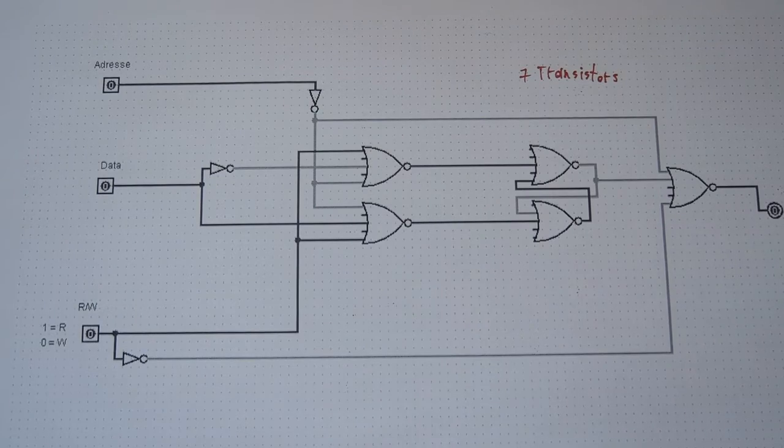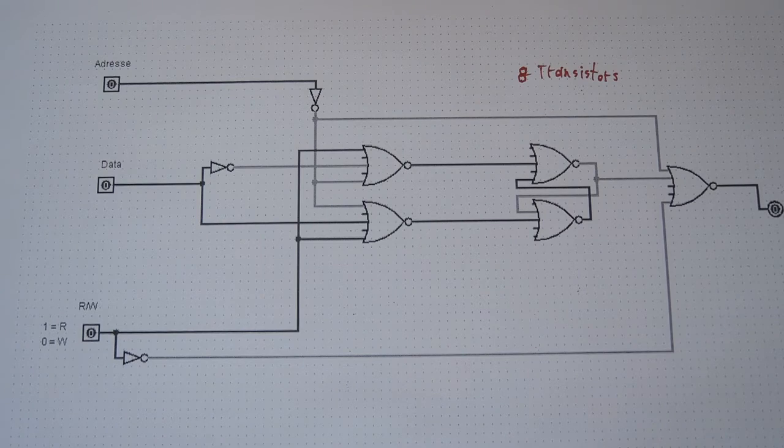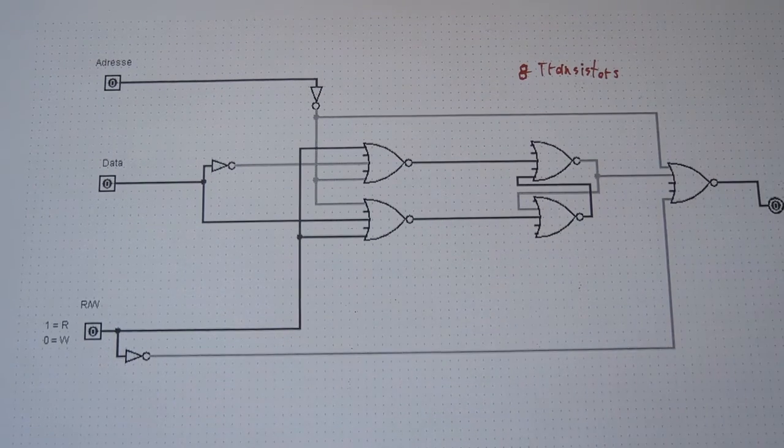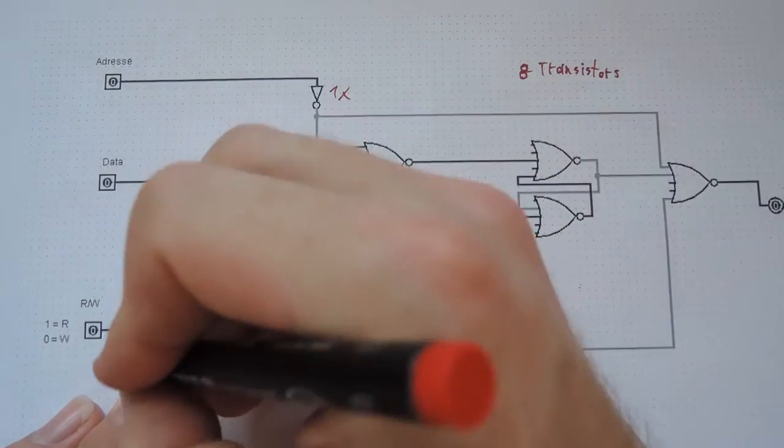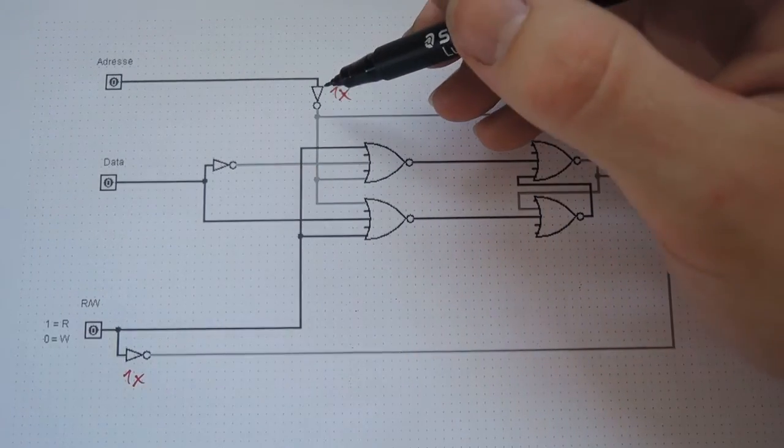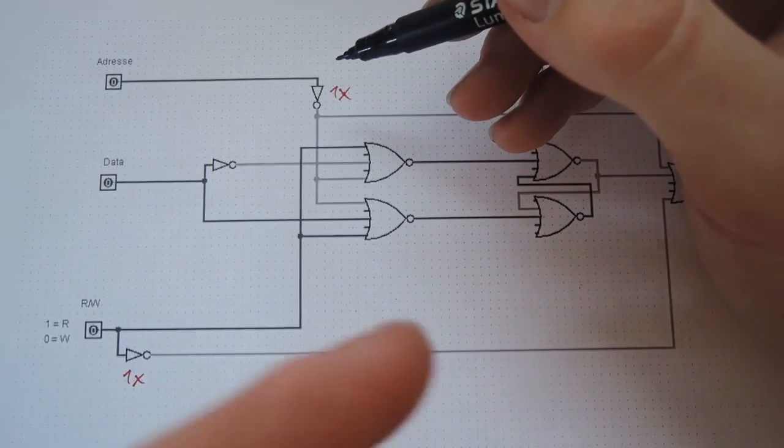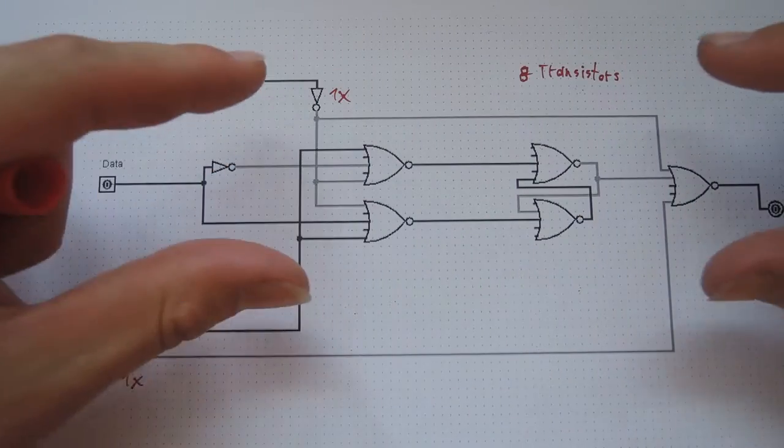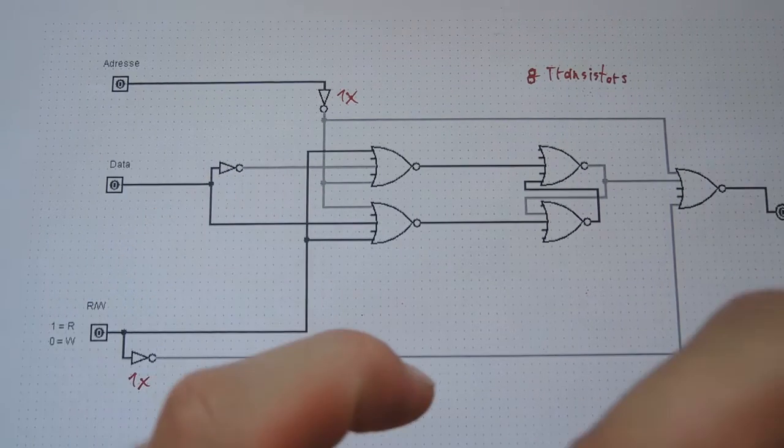What you need: seven transistors, ah that's eight. That's a bit much, but you need this one time and this one time. Because you can OR the address - the address is the same on every cell, but the data has to be inverted every time.